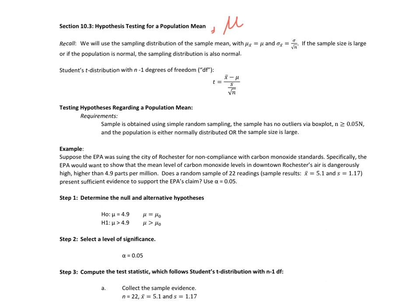So we're going to be using the sampling distribution of the sample mean. Back from chapter 8, we know that the mean is this and the standard deviation is this. The criteria is if the sample size is large or if the population is normal, the sampling distribution is also normal. We also talked about how we run into problems with the standard deviation when we're on the normal curve, so we switch over to student's t distribution.